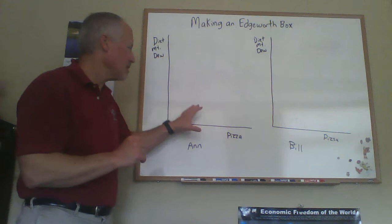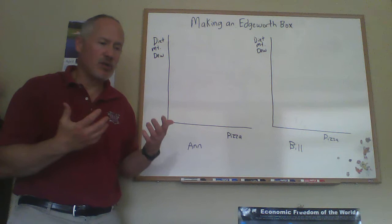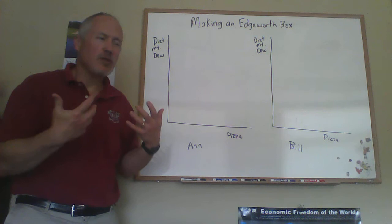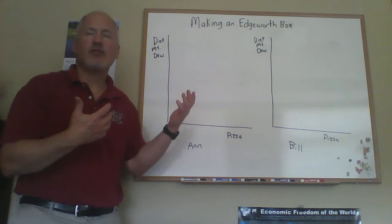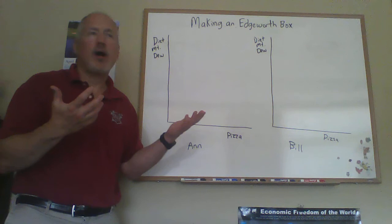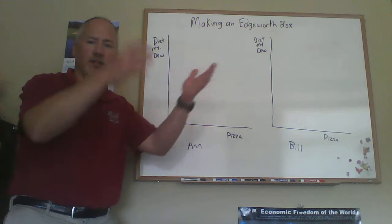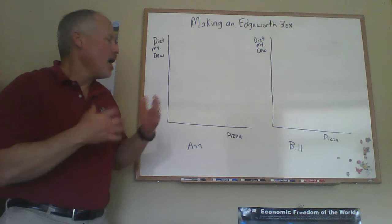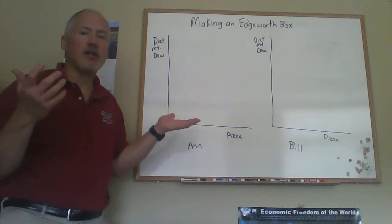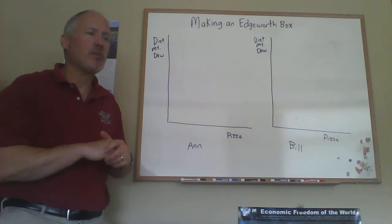With the Edgeworth box, what we have is a two-person pure exchange economy. We're going to assume we have quantities of two different goods that can be traded between the two people. If you want to think of the story of Robinson Crusoe — Robinson Crusoe and Friday on their island — maybe they have bananas and coconuts, nature's bounty that they can trade back and forth. The better way to think about it for this model is that production has already occurred, and now we're just going to think about how the people are going to trade.